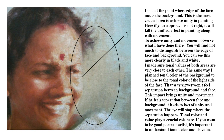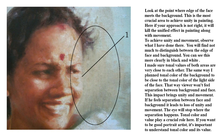Look at the point where the edge of the face meets the background. This is the most crucial area to achieve unity in painting. If your approach is not right here, it will kill the unified effect in painting along with movement. To achieve unity and movement, observe what I have done there. You will find not much to distinguish between the edge of the face and the background — you can see this more clearly in black and white. I made sure tonal values of both areas are very close to each other.